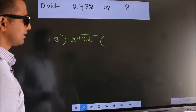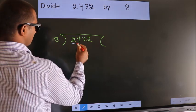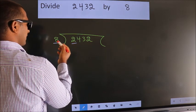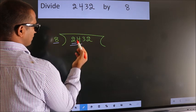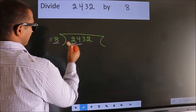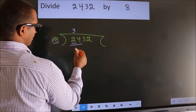This is your step 1. Next, here we have 2. Here 8. 2 smaller than 8. So, we should take 2 numbers, 24. When do we get 24? In 8 table. 8 threes, 24.